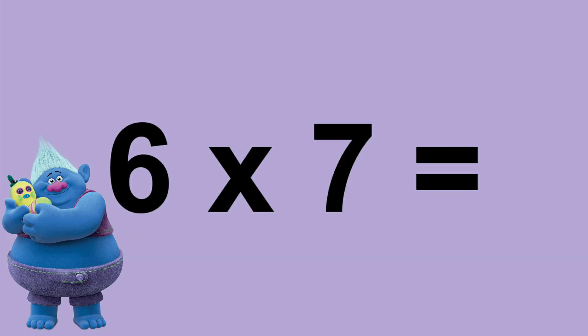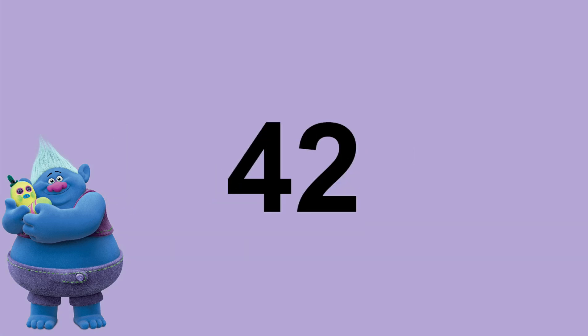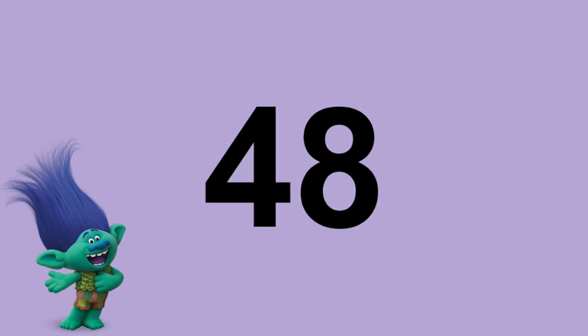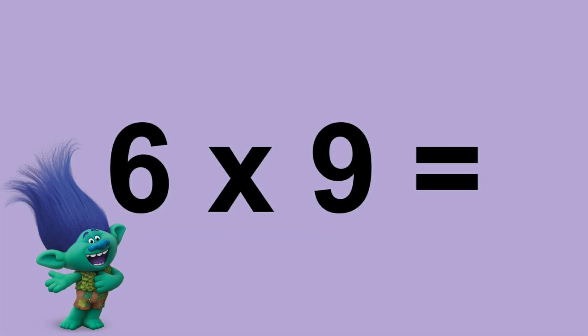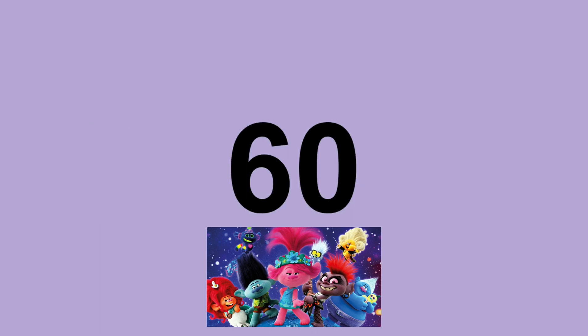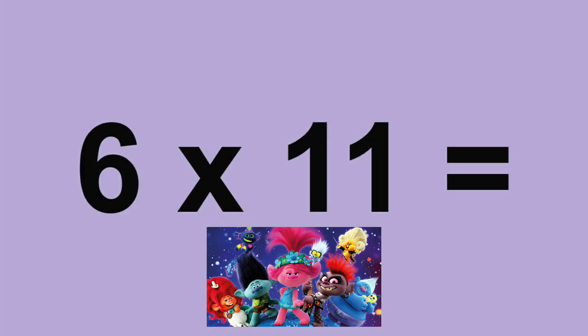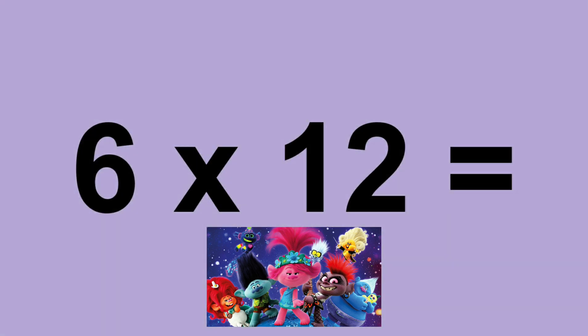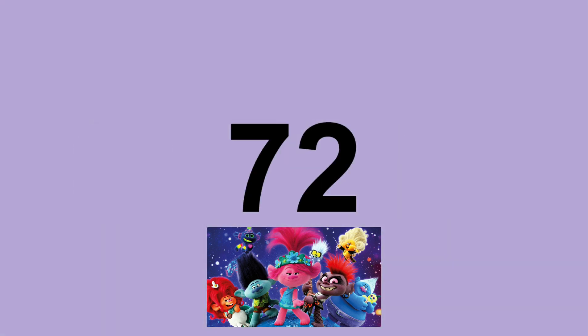Six times seven equals forty-two. Six times eight equals forty-two. Six times nine equals fifty-four. Six times ten equals sixty. Six times eleven equals sixty-six. Six times twelve equals seventy-two.